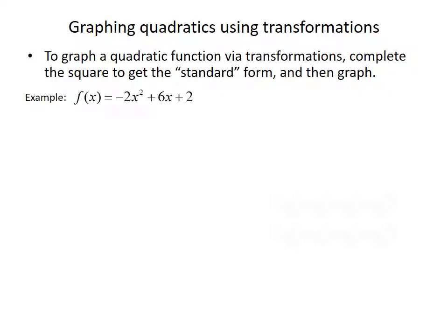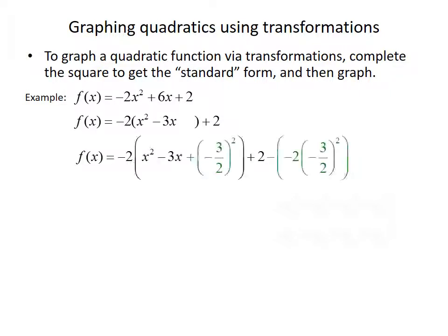We have the quadratic function f of x equals negative 2x squared plus 6x plus 2. To complete the square, we factor out a negative 2 from the first two terms, giving us negative 2 times x squared minus 3x, and then add 2 outside of the parentheses. To complete the square for x squared minus 3x, take the middle term, divide the coefficient by 2 — so negative 3 divided by 2 — and square that, giving negative 3 over 2 squared.